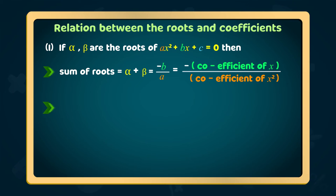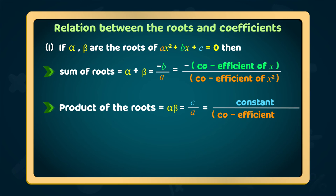Second point: product of the roots equal to α × β = C/A. This can also be represented as constant of the quadratic equation divided by coefficient of x² of the quadratic equation.